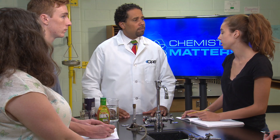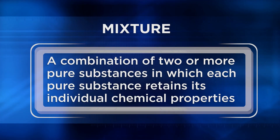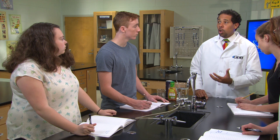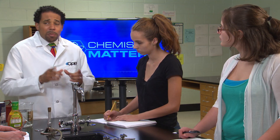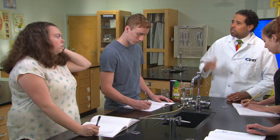A mixture is a combination of two or more pure substances in which each pure substance retains its individual chemical properties. A pure substance is made up of just one chemical — either an element alone or a group of elements chemically bonded to each other. Everyday matter is composed mostly of mixtures, and substances tend to mix naturally. It's extremely difficult to keep any single substance pure.